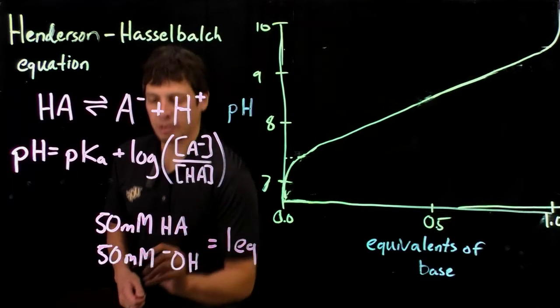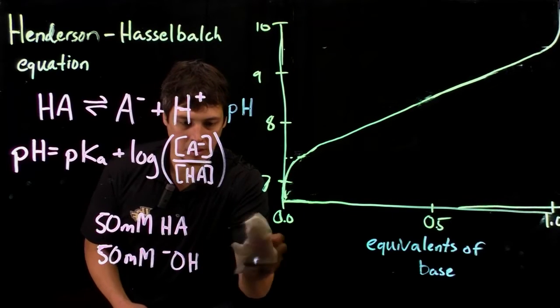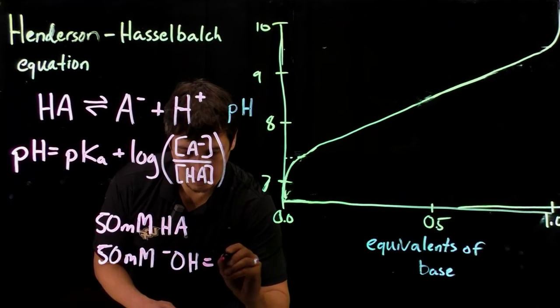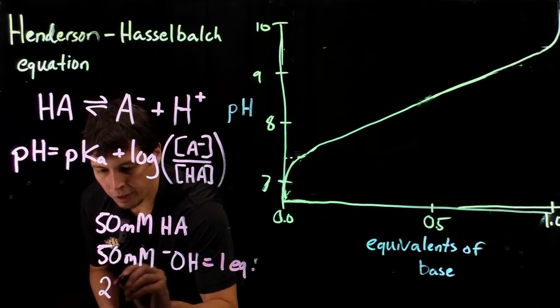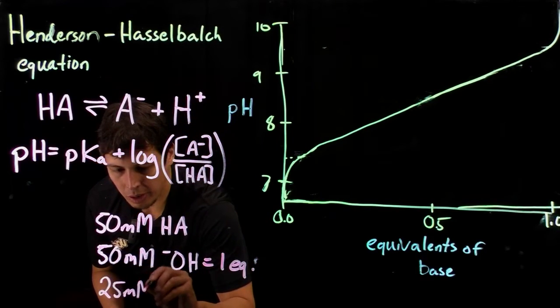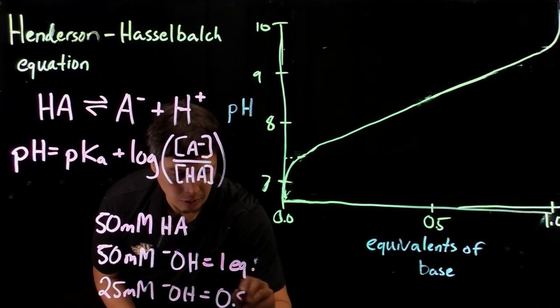If we had 25 millimolar, so this is one equivalent or one EQ. If we only added 25 millimolar hydroxide, this would be half an equivalent.